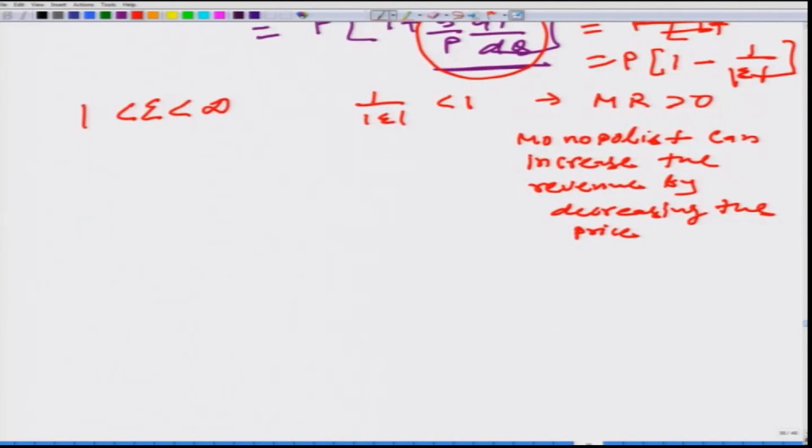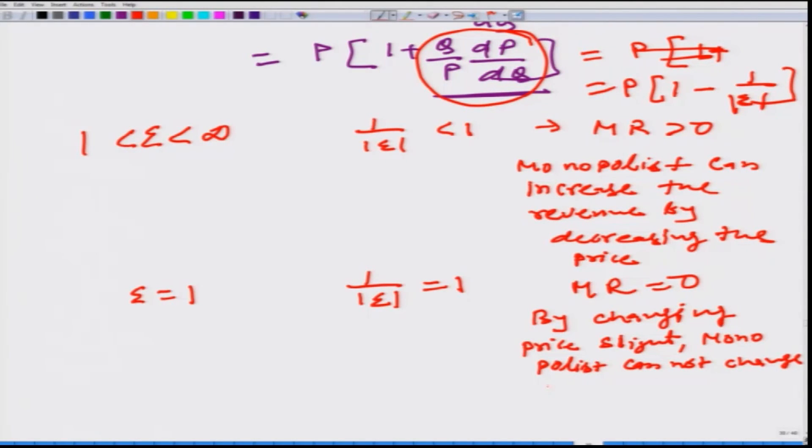Let us look at the case when epsilon is equal to 1. What happens to 1 by epsilon? It is also equal to 1 and MR has to be equal to 0. By changing price slightly, monopolist cannot change its revenue.